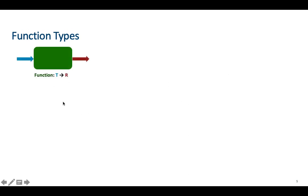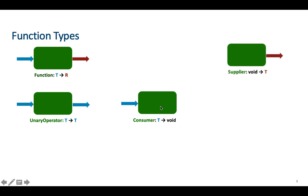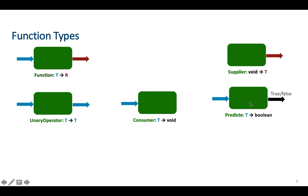So we have Function — when inputs and outputs are the same type it's called Operator. We have Consumer — one input and no output, so everything that comes in is consumed by this type. We have Supplier — no inputs but it generates outputs, so such a type generates elements. And we have Predicate — it gets inputs and returns true or false.